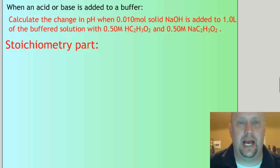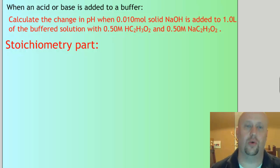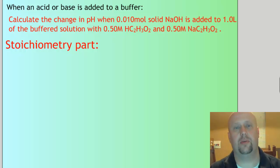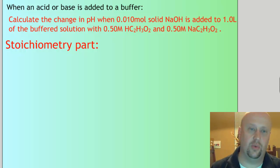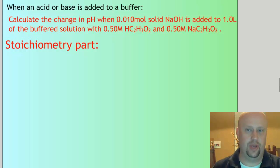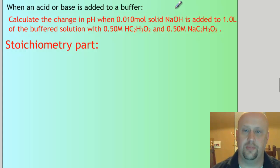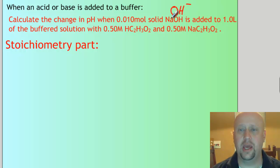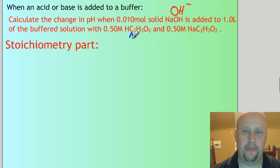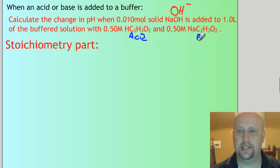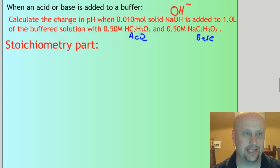Let's work through what happens when you add an acid or a base to the buffer. There are two parts: a stoichiometry part and then an equilibrium or Henderson-Hasselbalch part. You have to do the stoichiometry part right first. We're adding solid NaOH, so basically we're adding OH⁻. Sodium doesn't really matter because it's always a spectator. So our acid is acetic acid and this is the conjugate base. When you add OH⁻, it reacts with the acid.